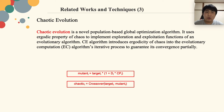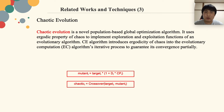Chaotic evolution is a novel population-based global optimization algorithm. It uses the Ergodicity property of chaos to implement the exploration and exploitation functions of evolutionary computation. The chaotic evolution algorithm introduces the Ergodicity of chaos into the evolutionary computation algorithm's iterative process to guarantee its convergence partially.